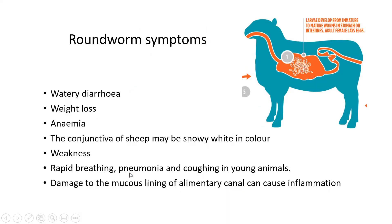Roundworm symptoms that help a farmer know whether livestock are infested include diarrhea, weight loss (because the worm steals nutrients), and anemia — especially if worms affect the red blood cells. The conjunctiva of the sheep may appear snowy white, almost as if the animal has gone blind. Affected animals are also weaker because they have less energy.